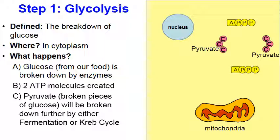Once glucose is broken apart, it's not glucose anymore. These broken fragments are called pyruvate. If oxygen is present, the pyruvates will go to the mitochondria, where the Krebs cycle and then the electron transport chain will occur. But this video is going to follow what happens when oxygen is not present — the pyruvates stay in the cytoplasm and fermentation is going to happen.